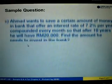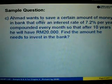So next example, Ahmad wants to save a certain amount of money in a bank that offers an interest rate of 7.2% per year, which is compounded every month. So that after 10 years, he will have RM20,000 in the bank. Find the amount he needs to invest in the bank.